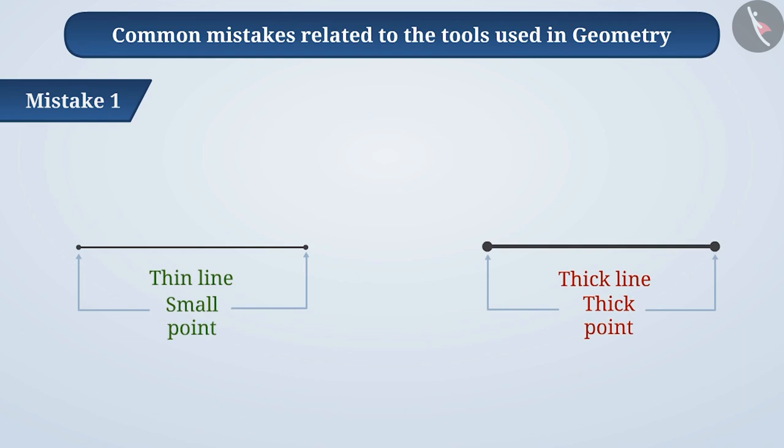For instance, with a thin line we get the measurement as 11.5 cm, while a thick line and thick points will give us the measurement here 11.7 cm.